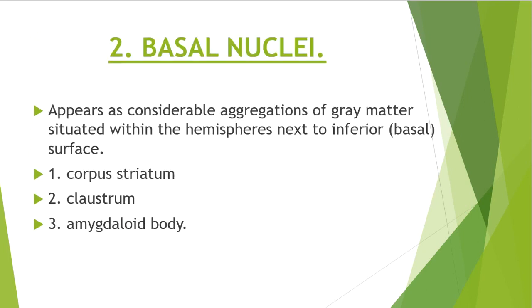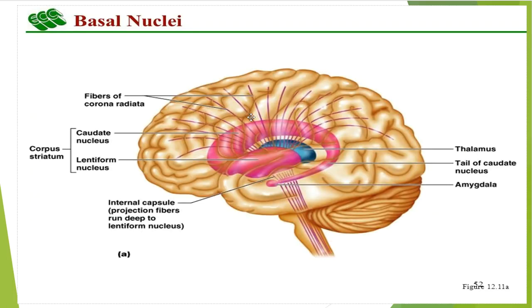The basal nuclei appear as a considerable aggregation of gray matter situated within the hemispheres, next to the inferior or basal surface. Here we can see the basal nuclei along with the thalamus and the amygdala.